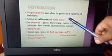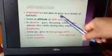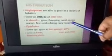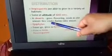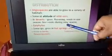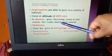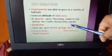Now the distribution. Angiosperms are able to grow in a variety of habitats, some at altitudes of 6,000 meters, in deserts. In deserts, they grow flowering seeds in one season. When the land receives water, germination occurs, then growth, then flowering, then seed production. This is one annual season, a few weeks during the rainy season. When it rains, the plants grow and produce seeds in deserts.